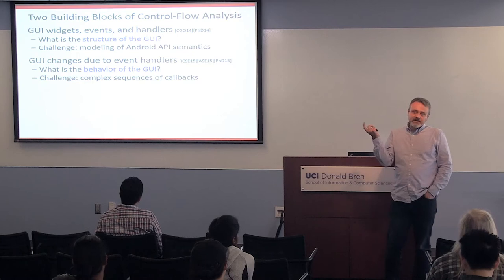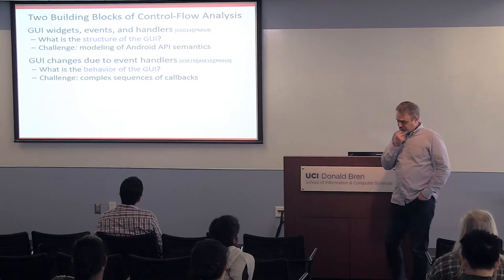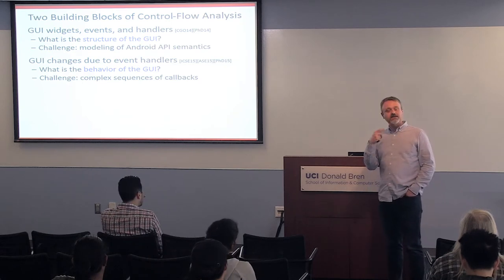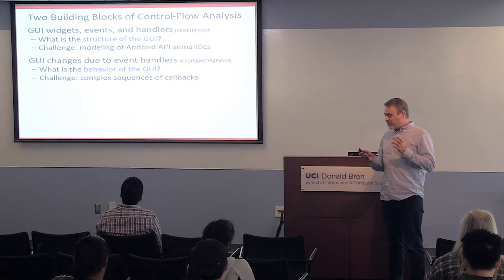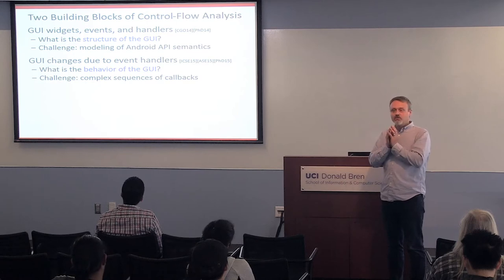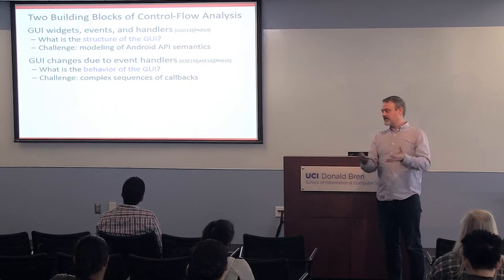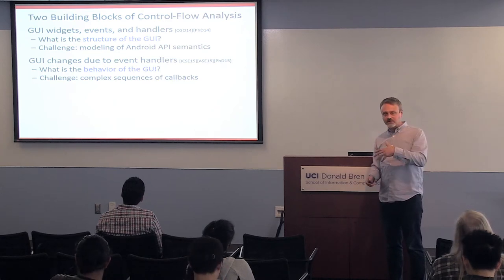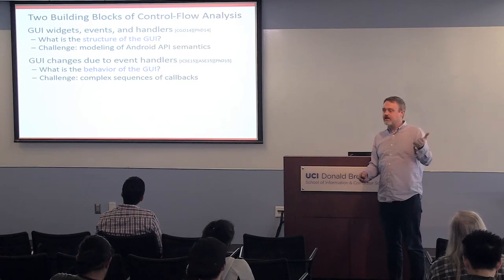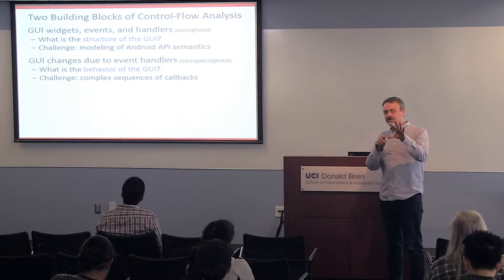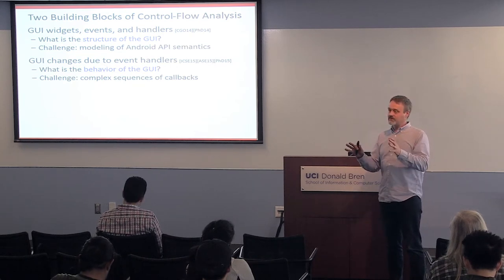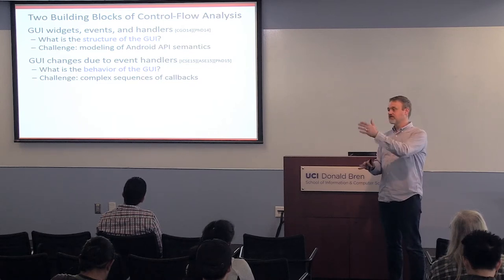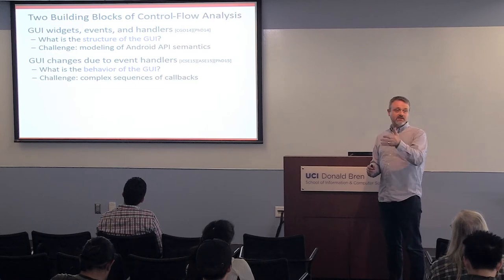I will talk about two specific aspects and some progress my group has made. The first problem is statically identifying a model of the structure of the graphical user interface of an application. This boils down to three things: widgets like buttons, windows that contain these widgets, and event handlers that get triggered when, say, a click event on a button happens. Being able to statically model these relationships is the first step of doing control flow analysis. The next step is to figure out, given the structure, what are the possible behaviors — the possible sequences of events, windows, and callbacks.